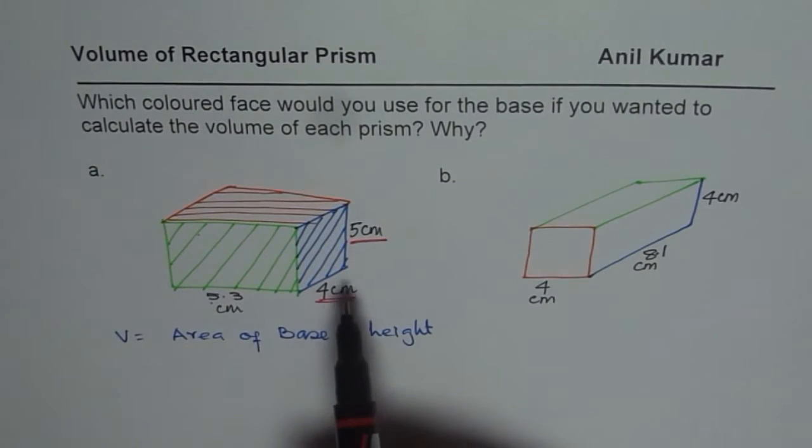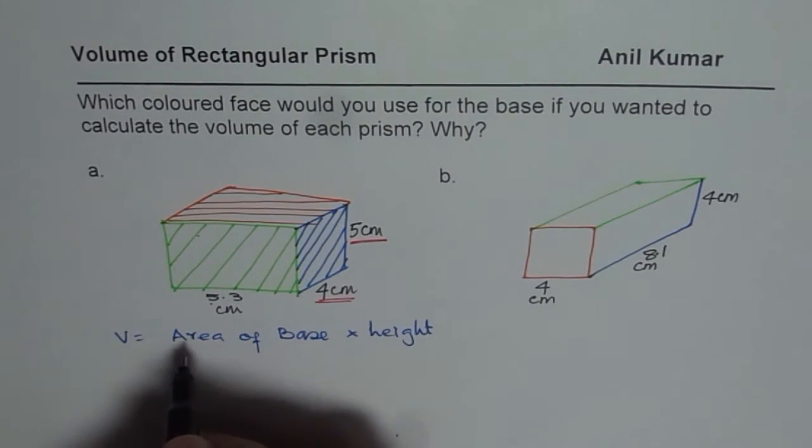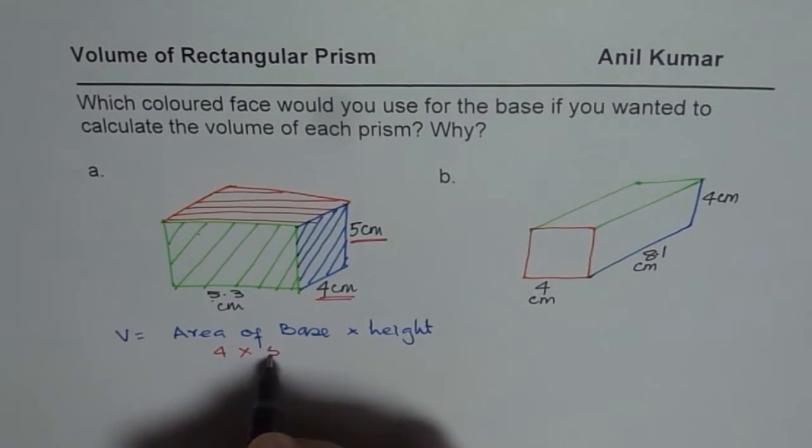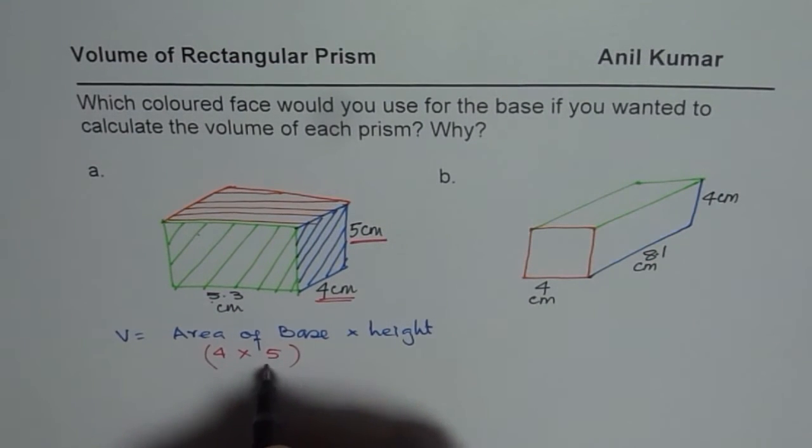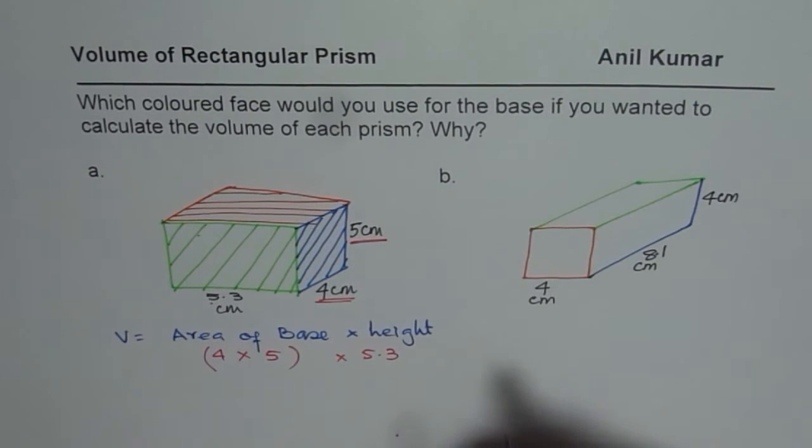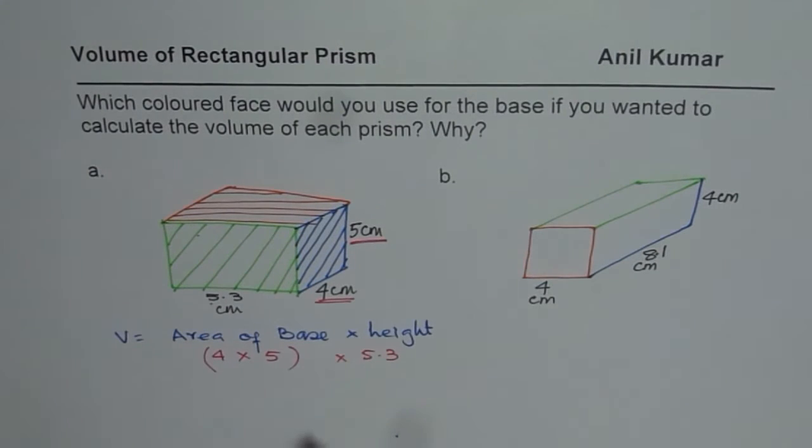So we will take 4 times 5 as our base. So the base for us will be 4 times 5. So that will be the base for us and then we will multiply by height which is 5.3. And of course, the units will be centimeter cube.